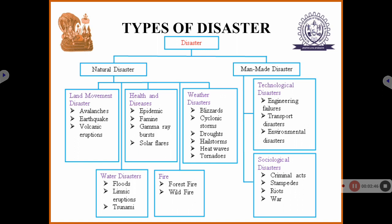Coming to types of disaster — there are two types: natural and manmade. Under natural disasters, land movement disasters include avalanches, earthquakes, and volcanic eruptions. Under health and disease, there are epidemics — the best example is COVID-19. Then there are cosmic events like gamma rays and solar flares. Weather disasters include cyclones and drought, which can occur due to extreme heat. Water disasters include floods and tsunamis, and fire disasters include wildfires.